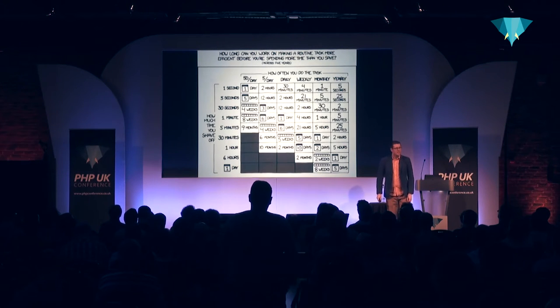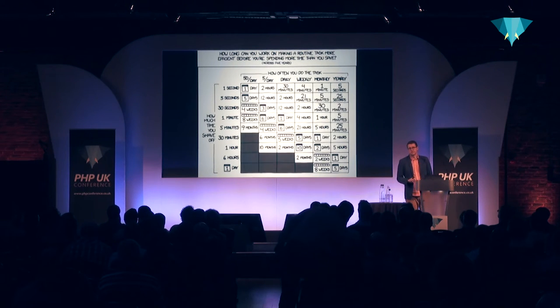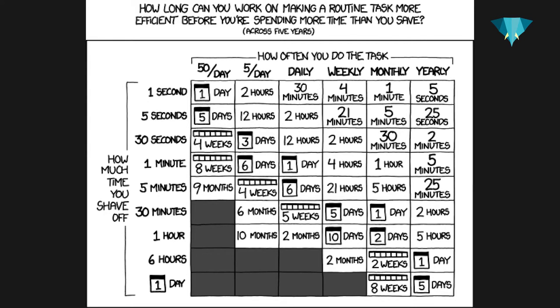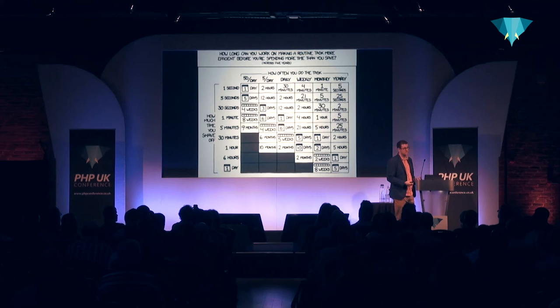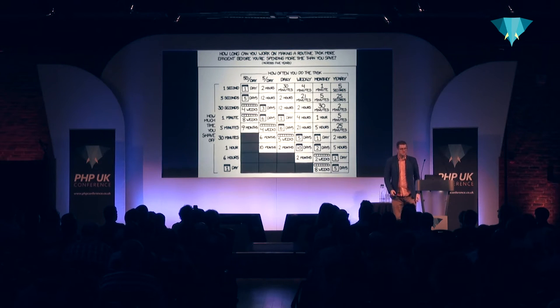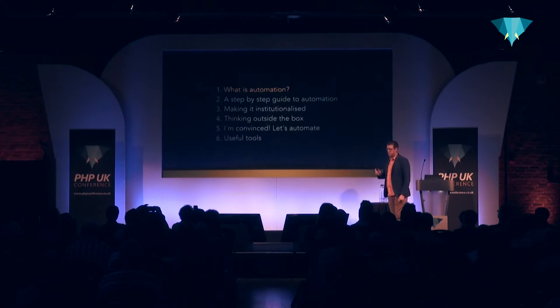There's an XKCD for everything, and this is one of my favorites. It shows you how long you can spend automating something and still get a payback within five years. If something takes an hour every week — say, generating spending reports for the boss — you can spend ten full days working on that automation, and so long as you run it every week, it will pay for itself within five years. You can spend ten days automating an hour's work.